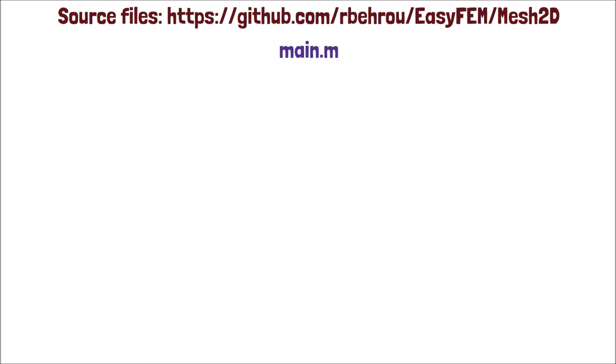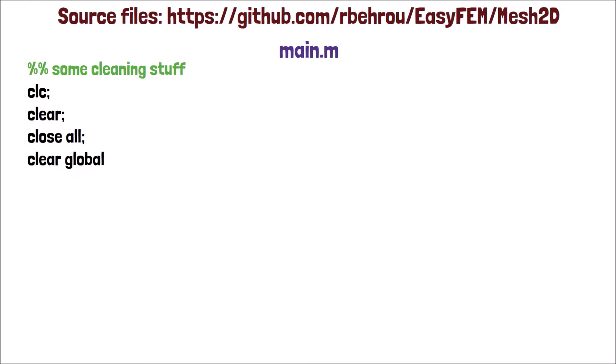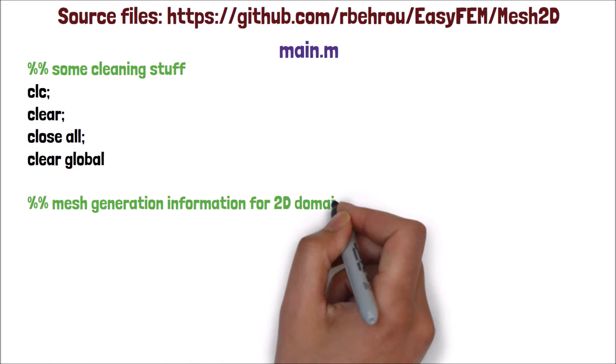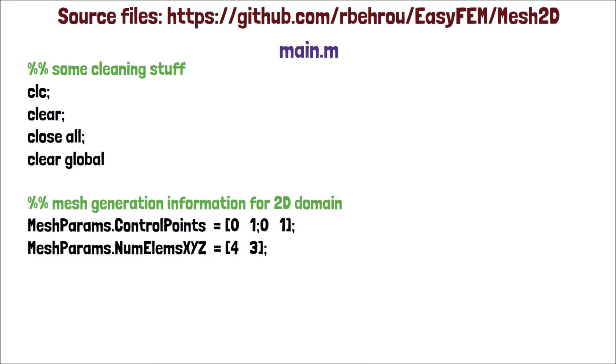All right, here is the content of the main.m function, some cleaning stuff to clean the MATLAB workspace and command window. We will use the meshParams variable as a MATLAB structure array, called struct, to store control points and the number of elements in each direction. For example, for a 1x1 domain, we want four elements in the x direction and three in the y direction.